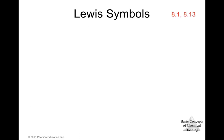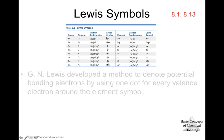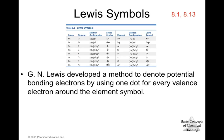Let's start by talking about the Lewis symbol. The electrons involved in chemical bonding are the valence electrons, which for most atoms are those in the outermost occupied shell. We have a table with different elements from group 1 through 8 and their Lewis symbols. G.N. Lewis developed a method to denote potentially bonding electrons by using one dot for every valence electron around the element symbol.